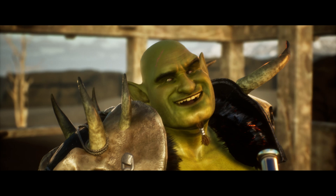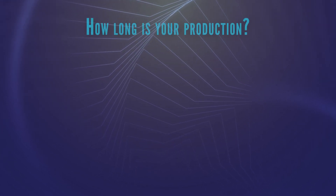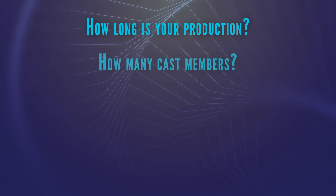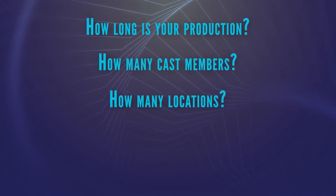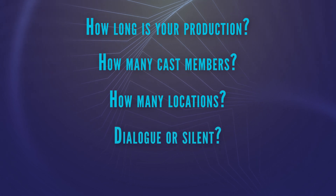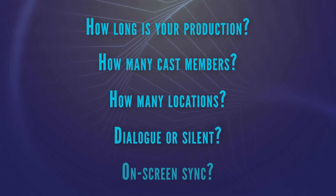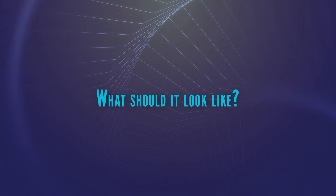You may be watching this lesson and have a pretty good idea of what you want to make, and you're impatiently waiting for me to get to the good stuff. But first, ask yourself some questions. How long is my production? How many cast members does it have? How many locations does it have? Is there dialogue or is it silent? If there is dialogue, is there on-screen lip-sync? And finally, what do I want it to look like?